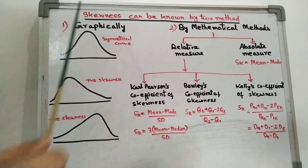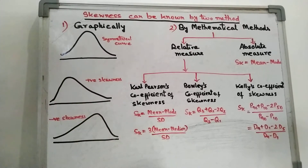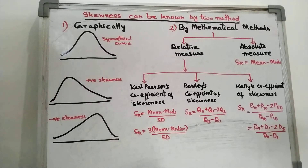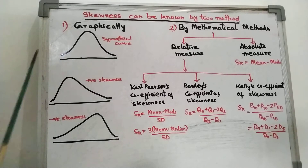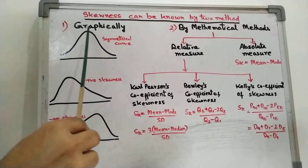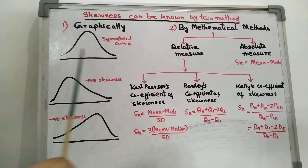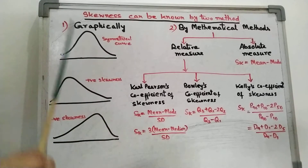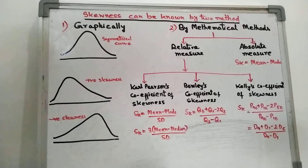As you know, what is skewness? Skewness means the absence of symmetry in a distribution, or lack of symmetry in a distribution. When a distribution is not symmetrical — this is the symmetrical figure — if the distribution is not symmetrical, it is called a skewed or asymmetrical distribution.